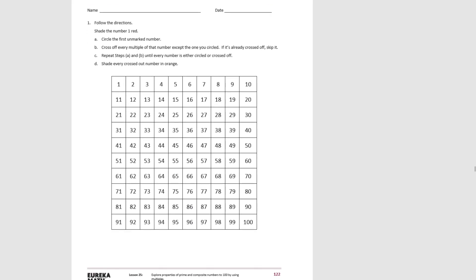So this says to follow the following directions. First, shade number one red. Then it says to circle the first unmarked number. So the first unmarked number is 2. Then it says to cross off every multiple of that number except the one you circled. If it's already crossed out, skip it.